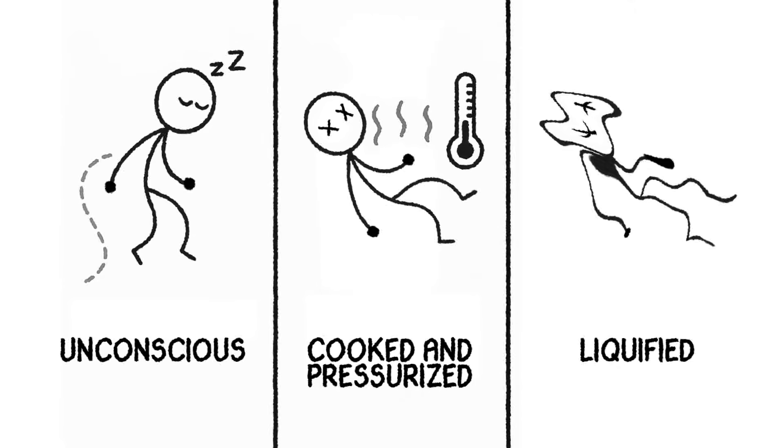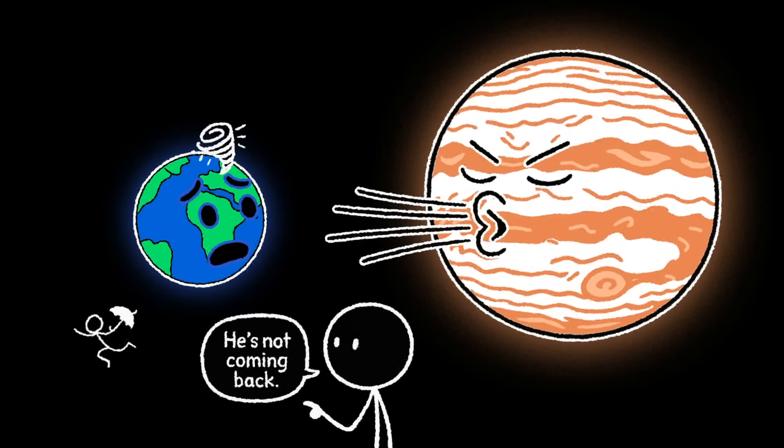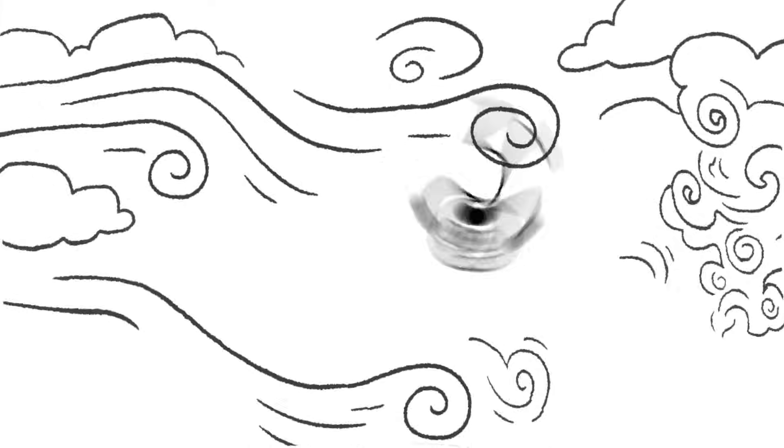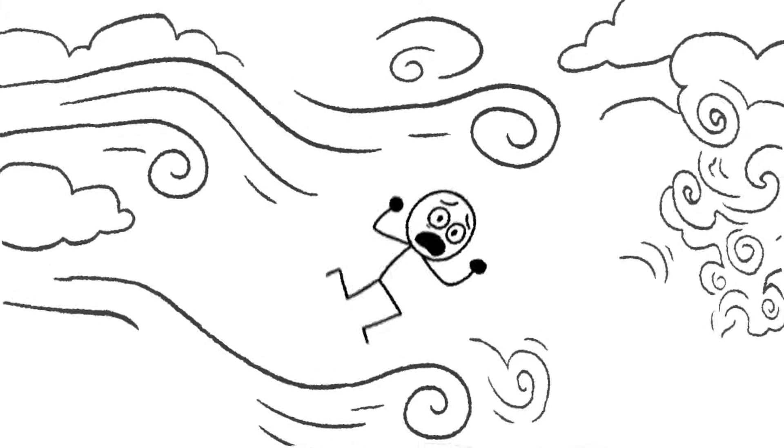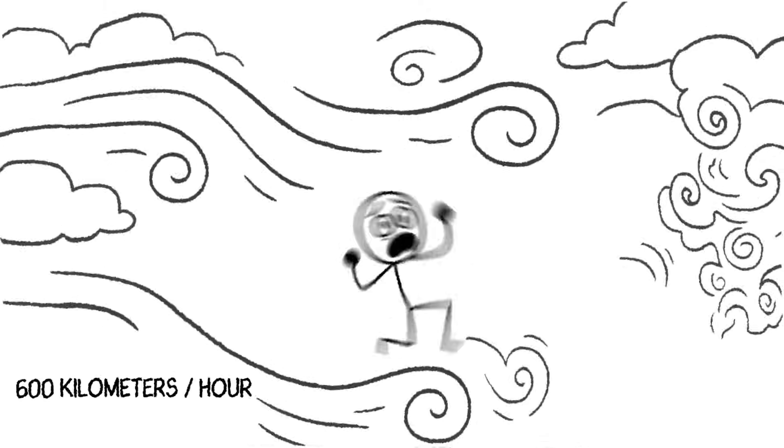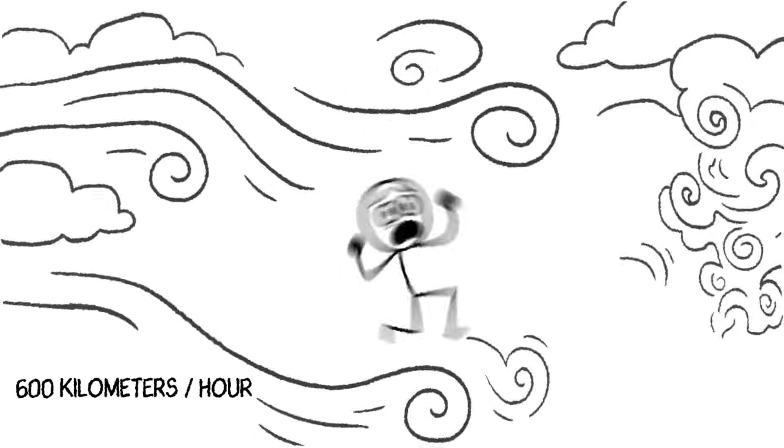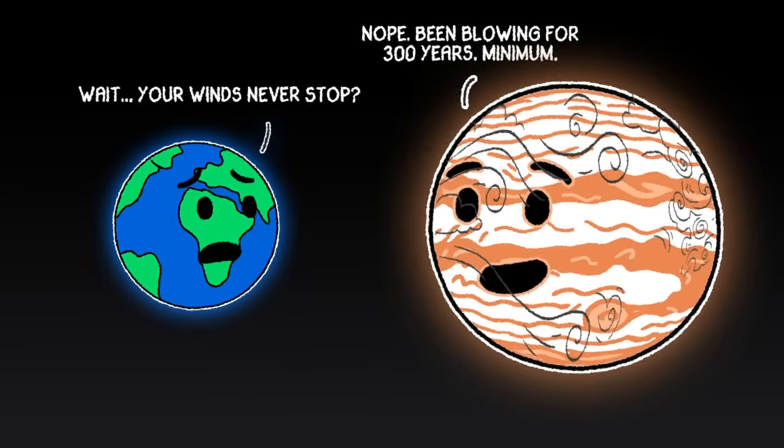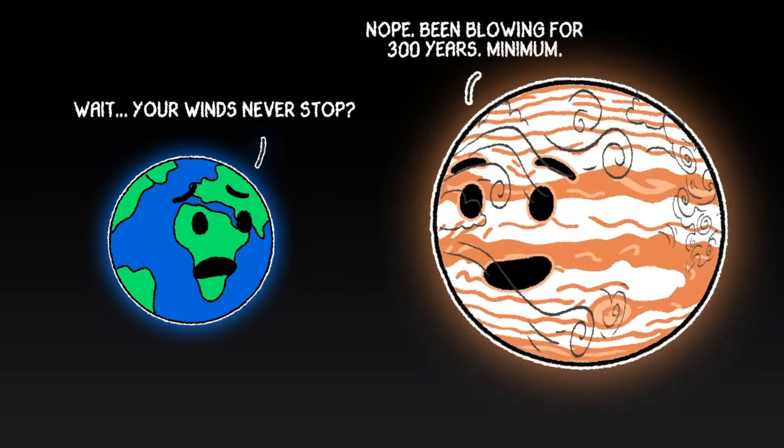But then, there's Jupiter's winds. If you thought a windy day here on Earth was bad, Jupiter laughs in hurricane. Its winds aren't gusty. They are relentless, titanic, and turbocharged. Jet streams rip through the atmosphere at speeds of up to 600 kilometers per hour. That is faster than most commercial airplanes and more powerful than a category 5 hurricane. But unlike hurricanes on Earth, these winds don't weaken. They never stop. They just keep going. Forever.